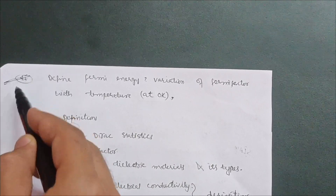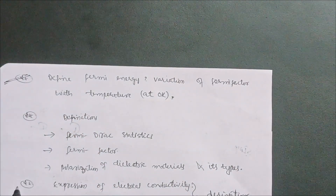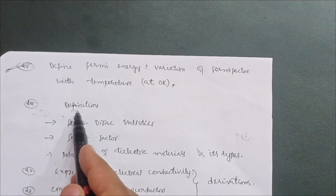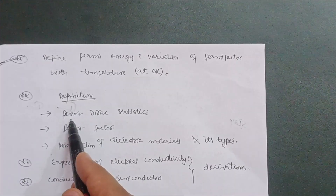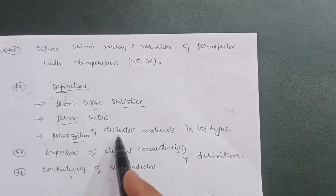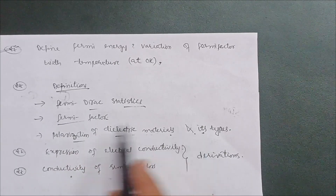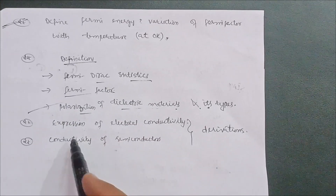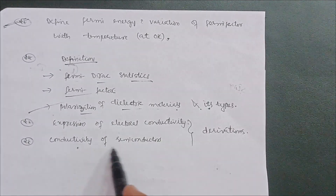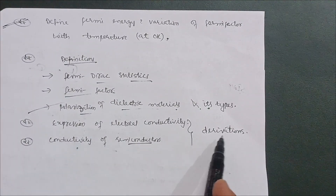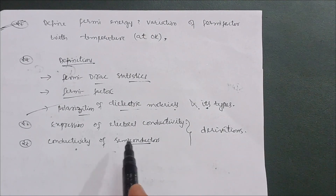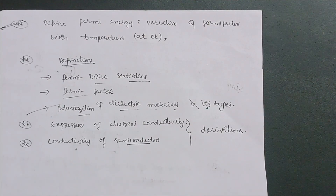Also for Module 4: define Fermi energy and explain the variation of Fermi factor with temperature at absolute zero — this was always asked in the VTU examination under the 2018 scheme. Cover definitions of Fermi-Dirac statistics, Fermi factor, and polarization of dielectric materials. Finally, go through the derivation of expression for electrical conductivity and conductivity of semiconductors. This much content is enough for Module 4.